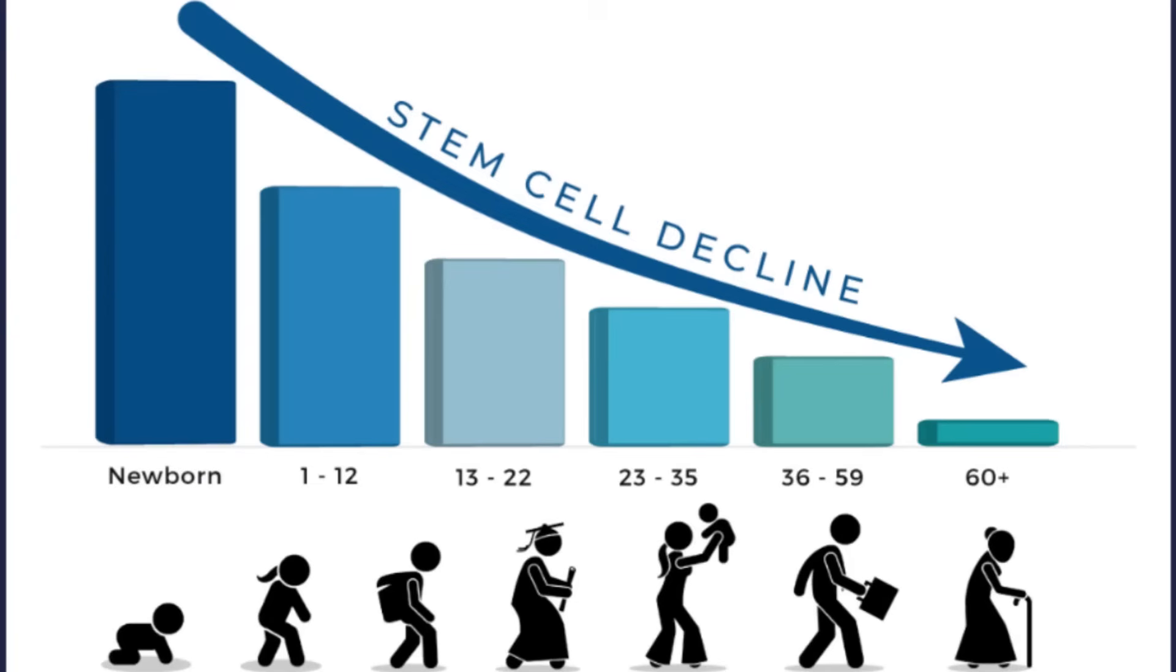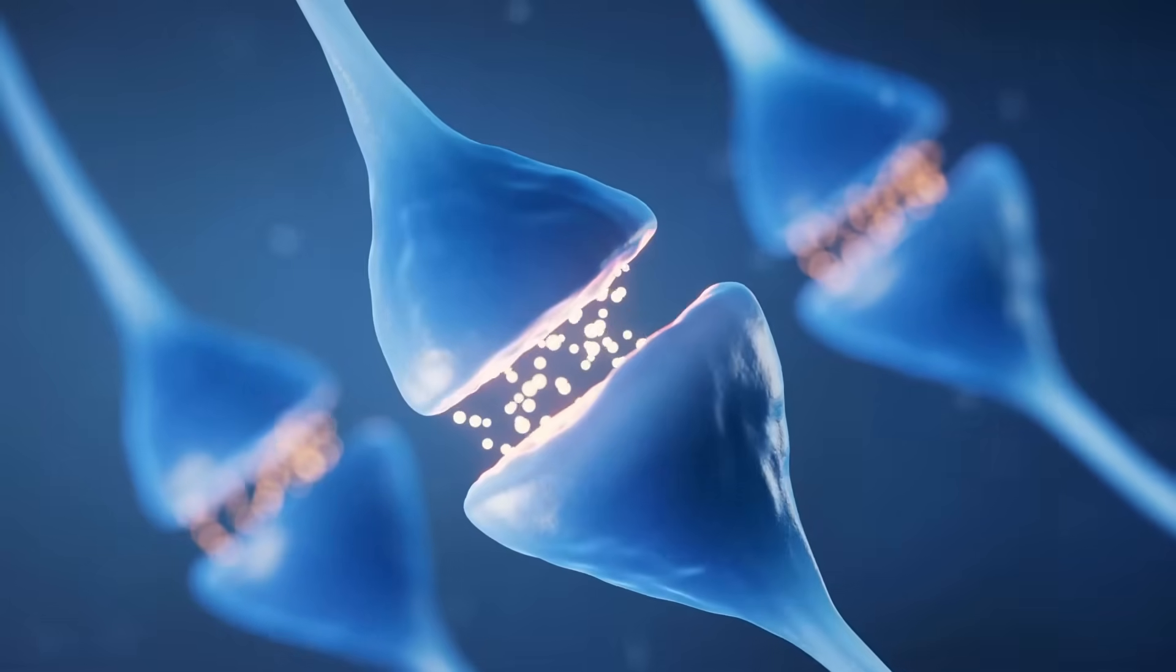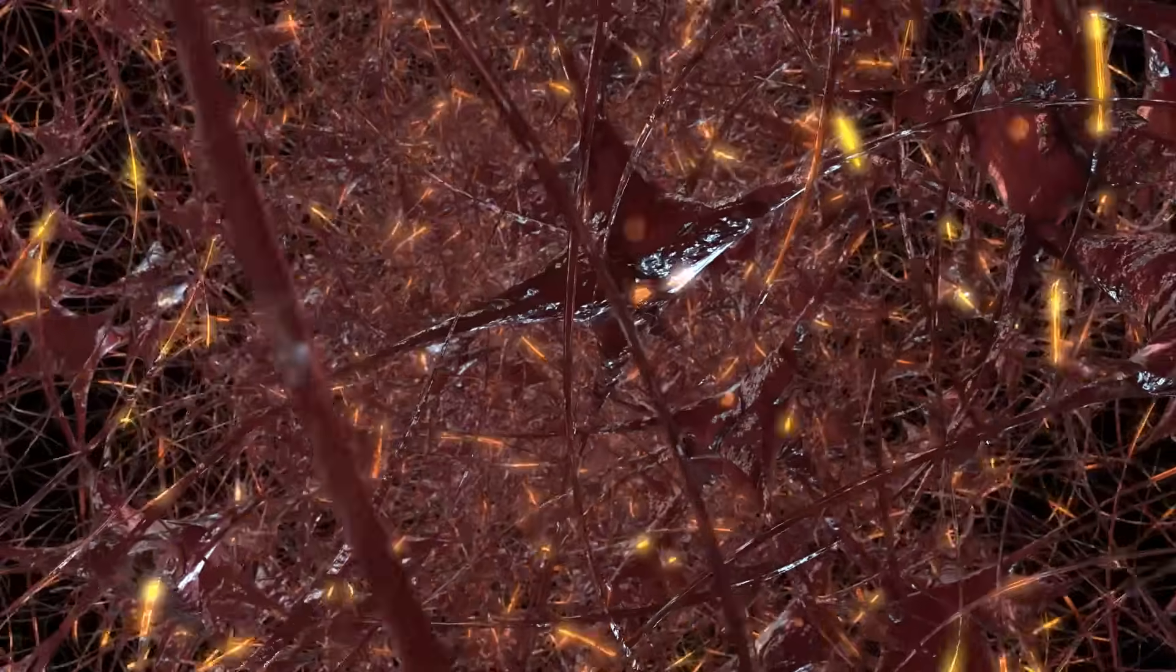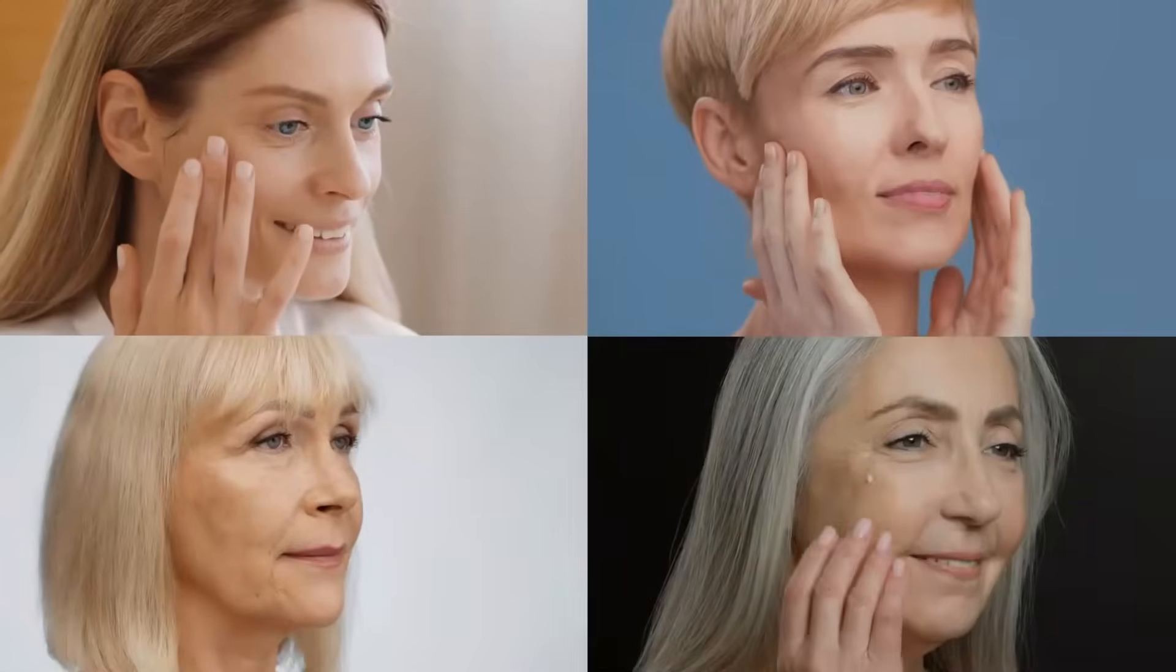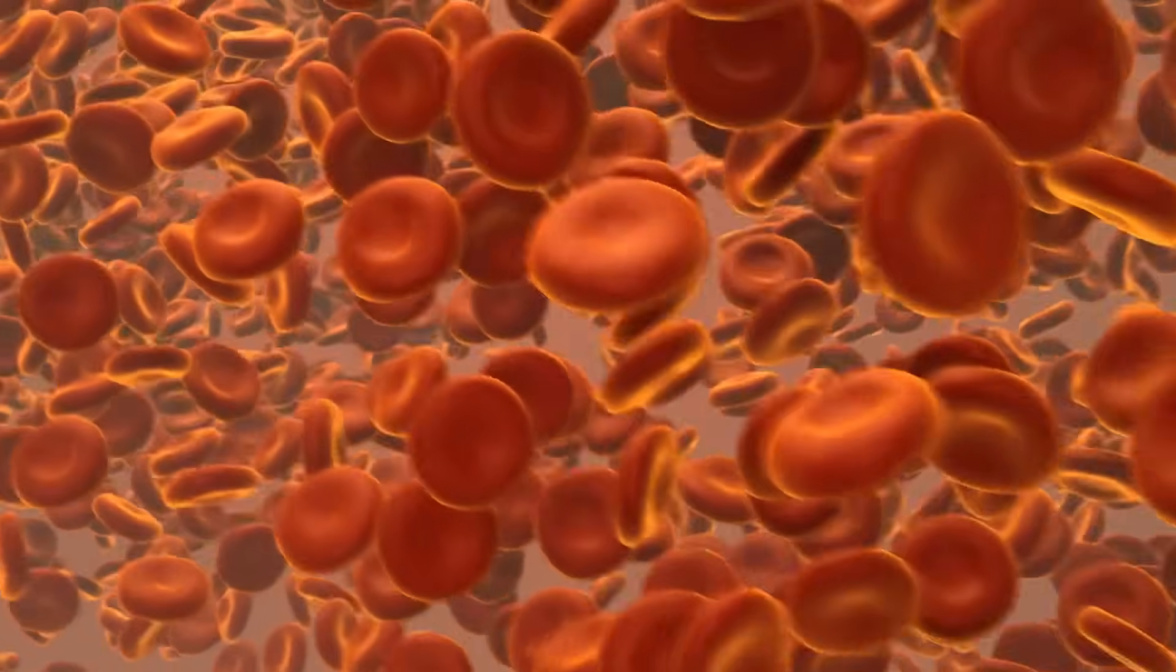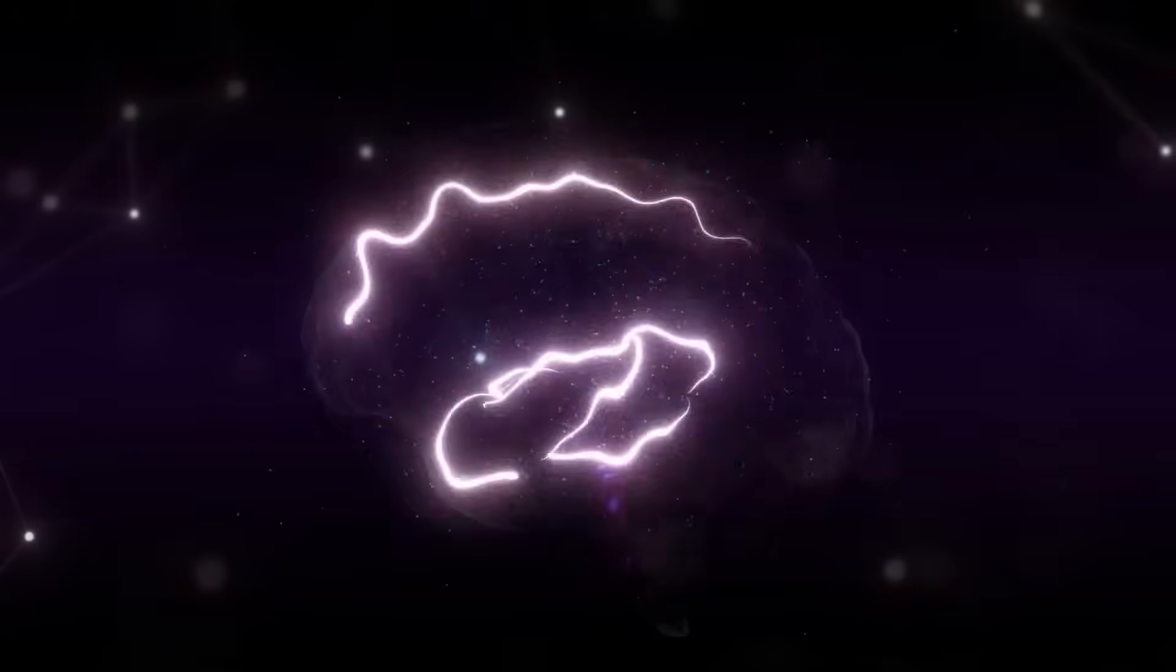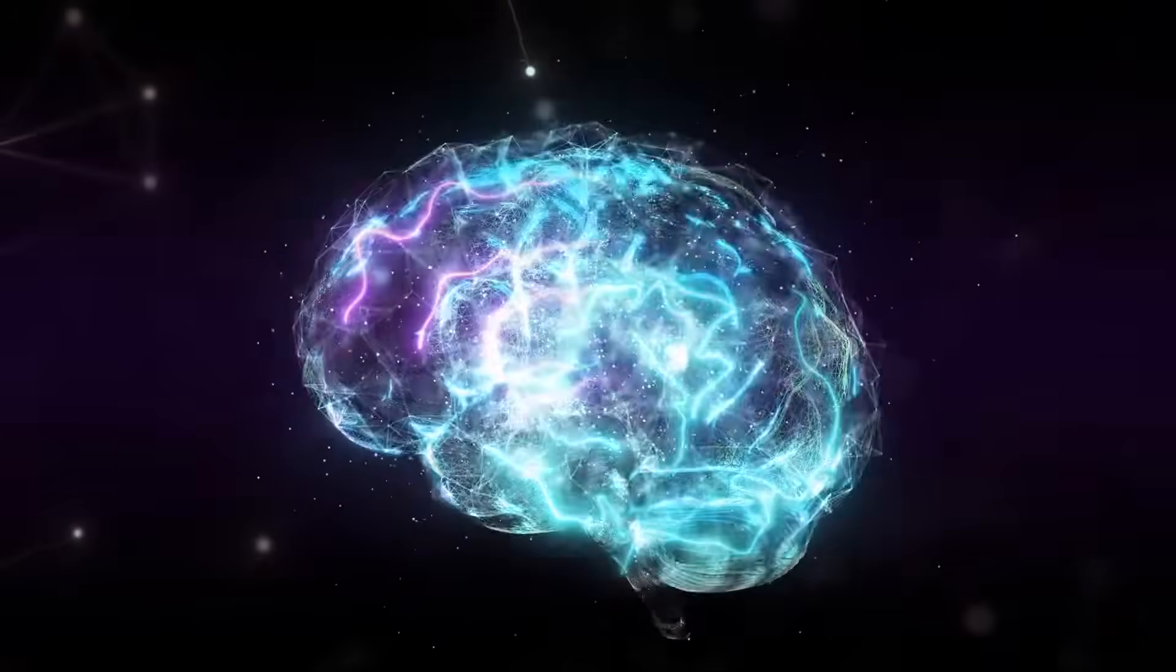Now let's talk about something revolutionary. Stem cell technology. As we age, our body produces fewer stem cells. These are the master repair cells that can transform into any type of tissue, including neurons. With fewer stem cells available, brain repair slows down, inflammation increases, and degeneration accelerates. But what if we could reverse that? What if we could activate your body's natural stem cell production, directing it to the brain and nervous system?